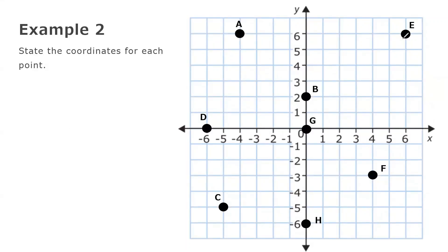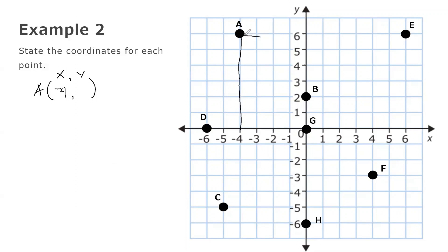Now let's look at example 2: stating the coordinates for each point. The first coordinate is the x-coordinate or abscissa, and the second coordinate is the y-coordinate or ordinate. For point A, x is negative 4 and y is positive 6, so the ordered pair is (negative 4, 6).